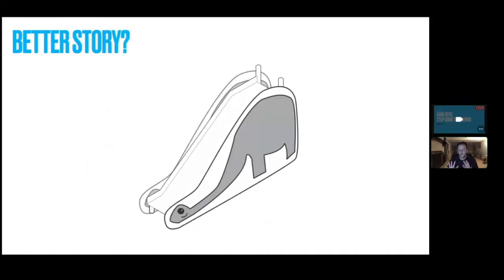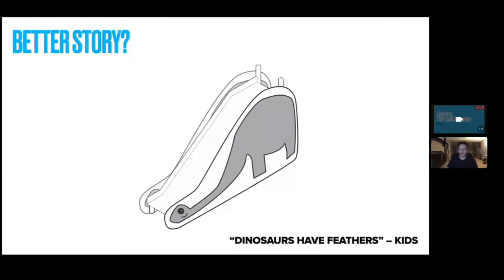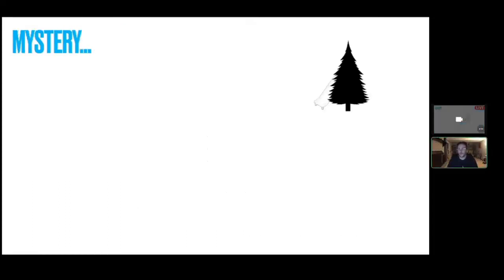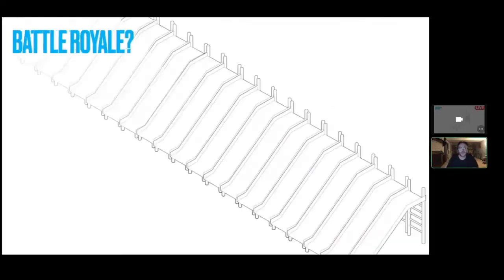You think: maybe it's not a system problem, maybe it's a narrative problem. You try to make a better story around the slide — it's not just a slide, it's a dinosaur; you make it modular so you can switch it out to a giraffe. Kids still not having fun. You decide they need to discover the slide, so you push it way off in the background behind a tree. Still not fun.